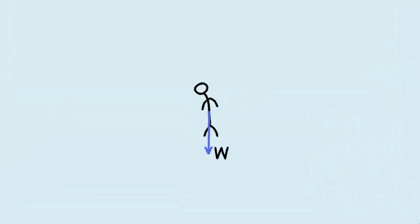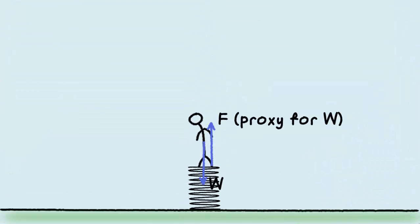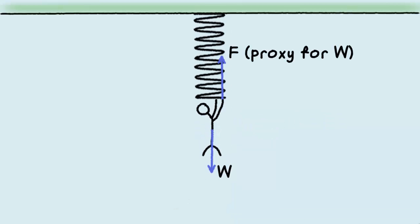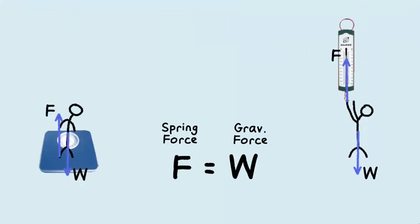How do we measure someone's weight? We can make him sit on a spring and measure the compression force, or we can make him hang on a spring and measure the tension force. This is how balances are used to measure gravitational forces indirectly.